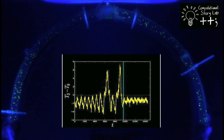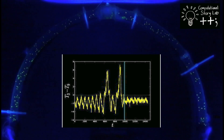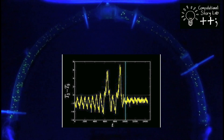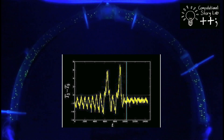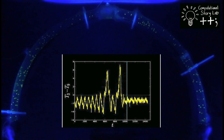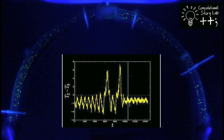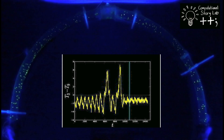In our lab, we are using computational fluid dynamics simulations of the loop as a testbed for data assimilation, ensemble forecasting, and model error experiments, with the ultimate goal of improving weather and climate predictions.